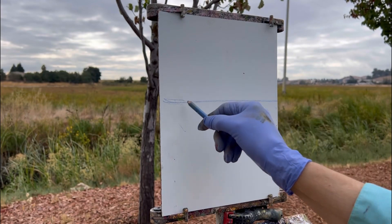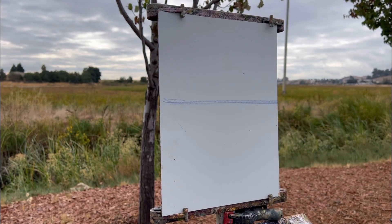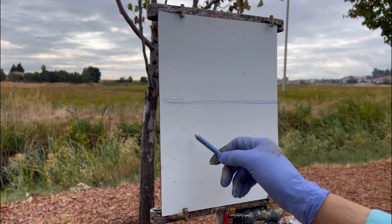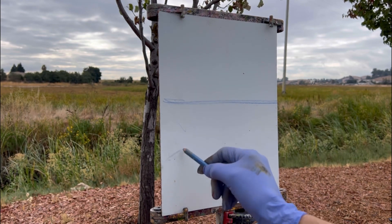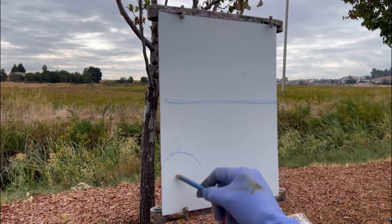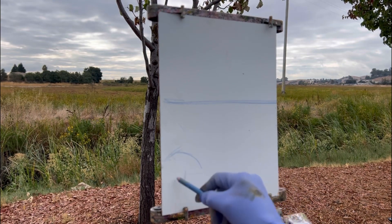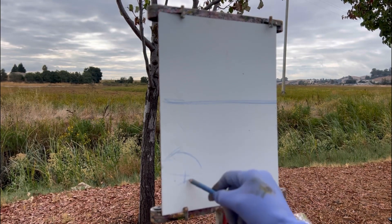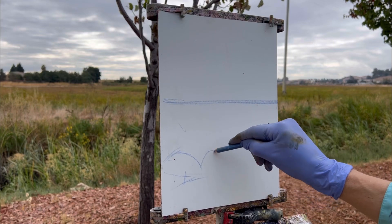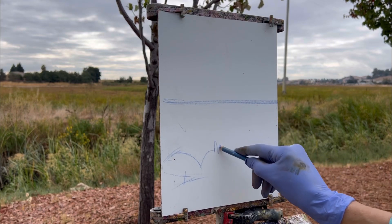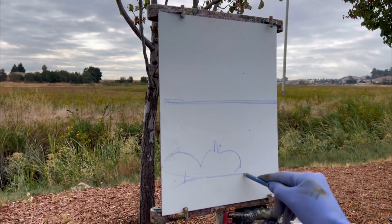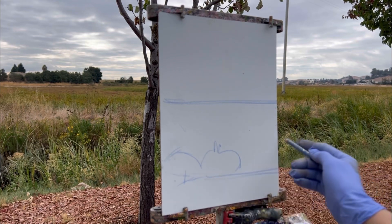So this is an actual gray day that I painted on location. Yesterday in the Painting Tip 10 on my YouTube channel, I did the development of a gray day in Art Rage, a program that I'm using. So I'm just getting a simple drawing down, big shapes, and I'm using a Carb Othello pastel pencil.